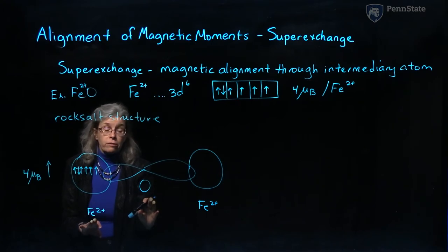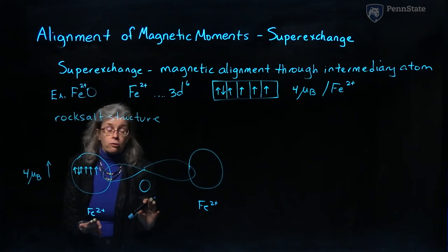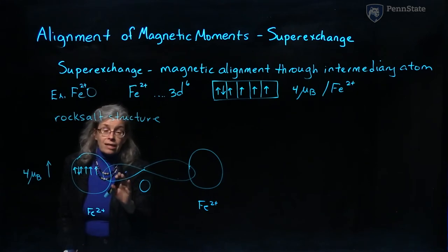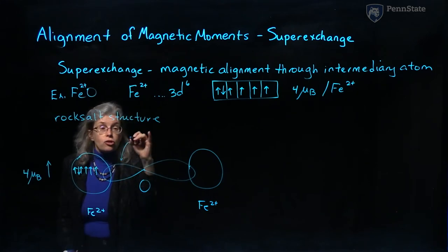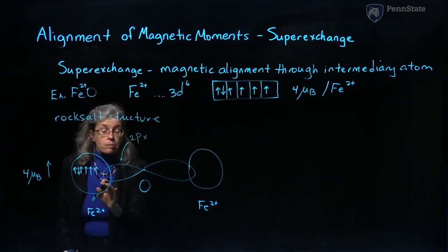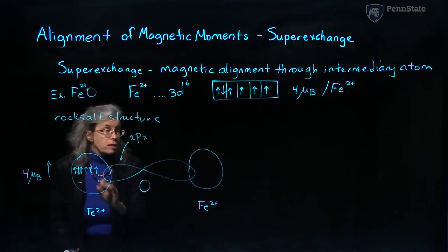And because there's some degree of covalency, the electron in this oxygen 2px orbital will spend some time shared interacting with the electrons in the d orbital.